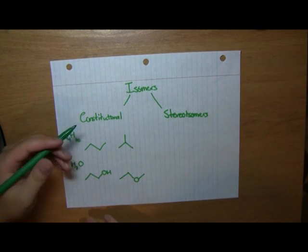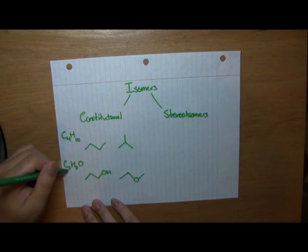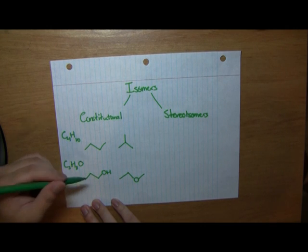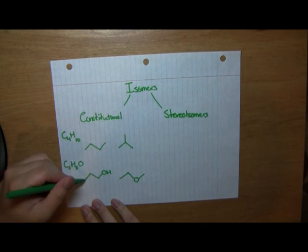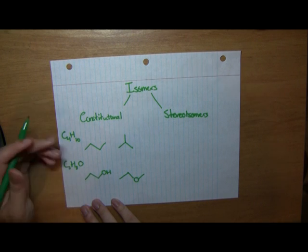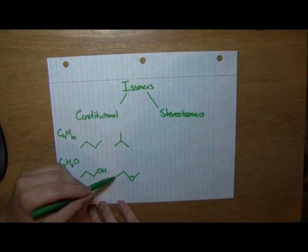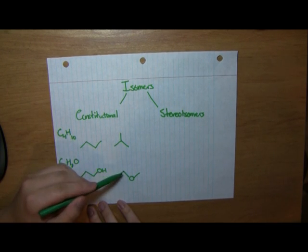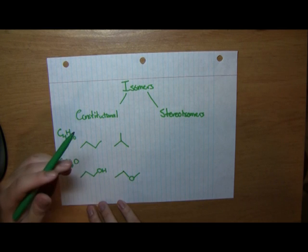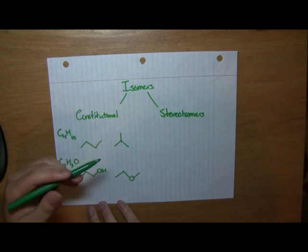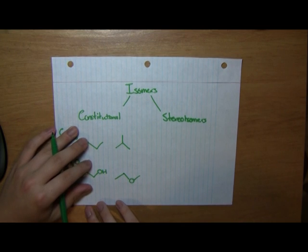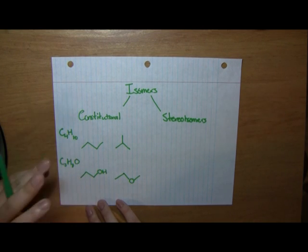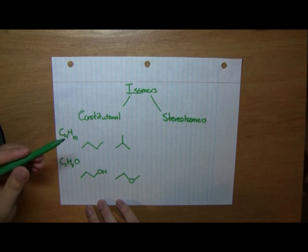Now again, let's count up the atoms to make sure they follow the formula. The alcohol has 8 hydrogens, 3 carbons, and 1 oxygen. The ether also has 8 hydrogens, 3 carbons, and 1 oxygen. So they follow the same formula, but again these two are obviously different molecules. So this basically does it for constitutional isomers.